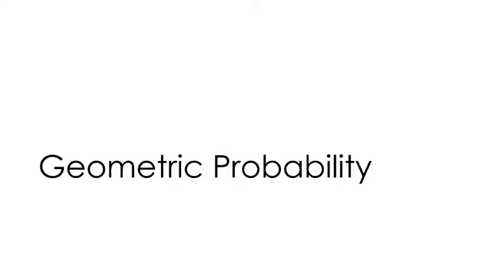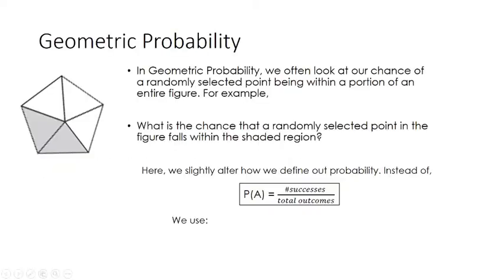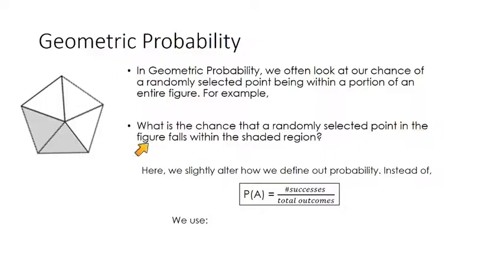In this video we're going to look at geometric probability. In geometric probability we often look at our chance of a randomly selected point being within a portion of an entire figure. For example, what's the chance that a randomly selected point in the figure falls within the shaded region? If I were to pick a point at random somewhere on this diagram, what are our chances that the point I selected is in the shaded area?